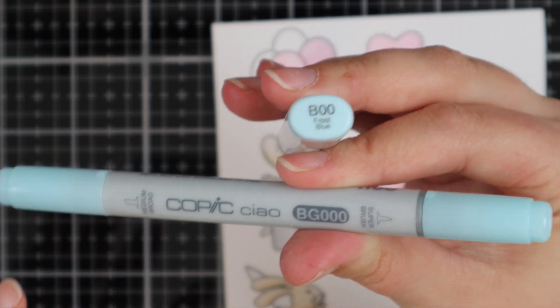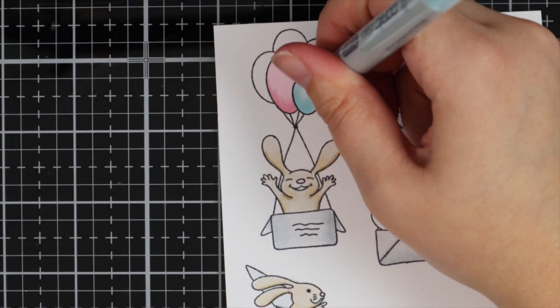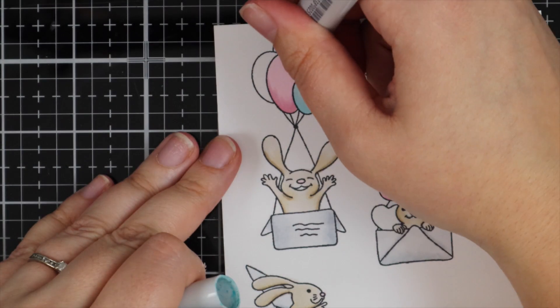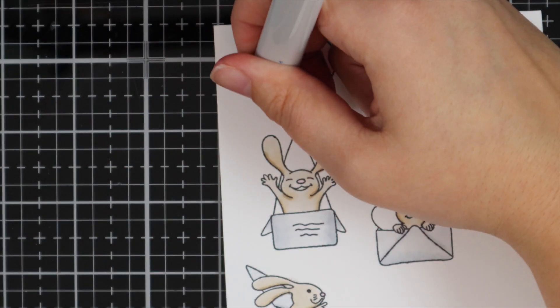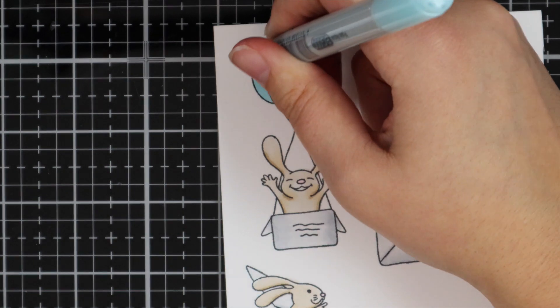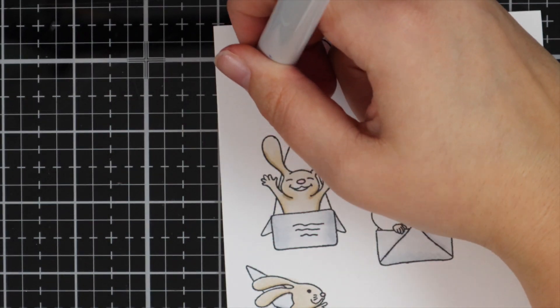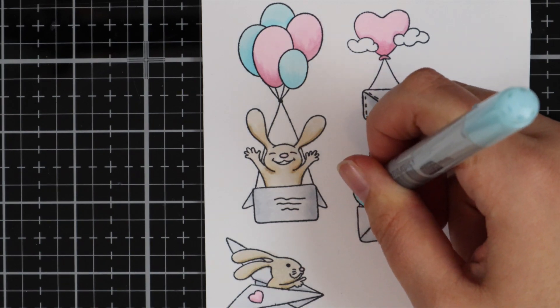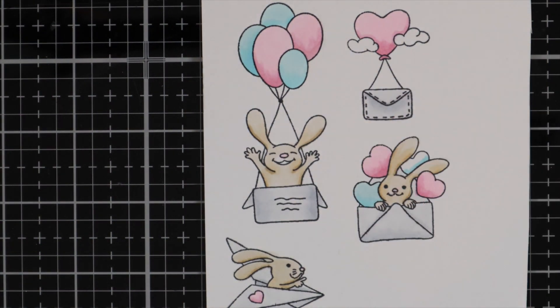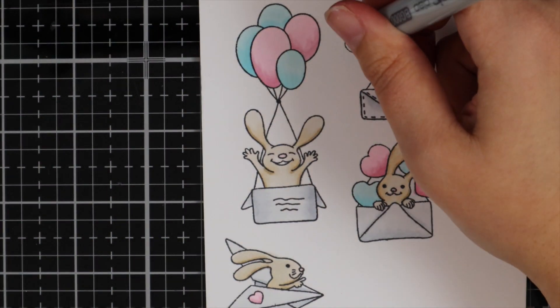And then for the last colors, I'm using B00 and BG000. So I'm just going to color in the rest of the balloons and the hearts, and then the little clouds. And I use these images because I thought they'd be really sweet for Valentine's Day, but then they also go well with birthdays and any cute critter card.